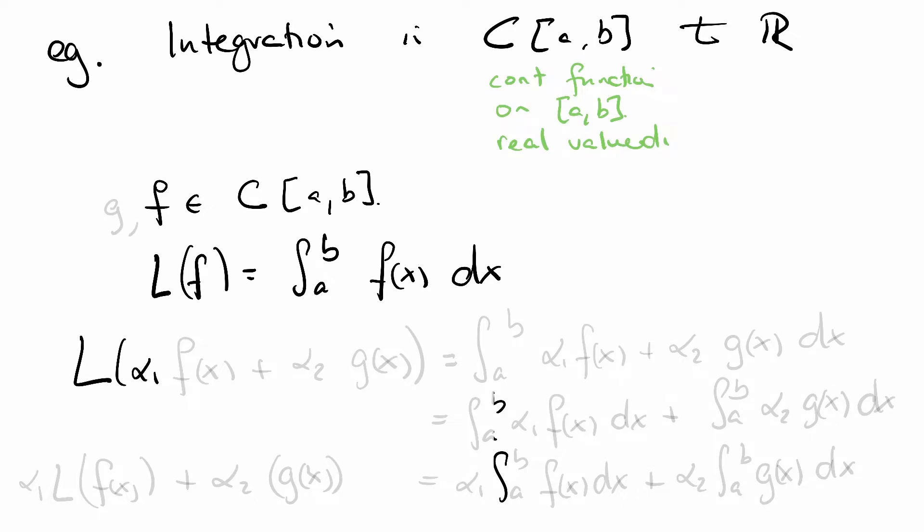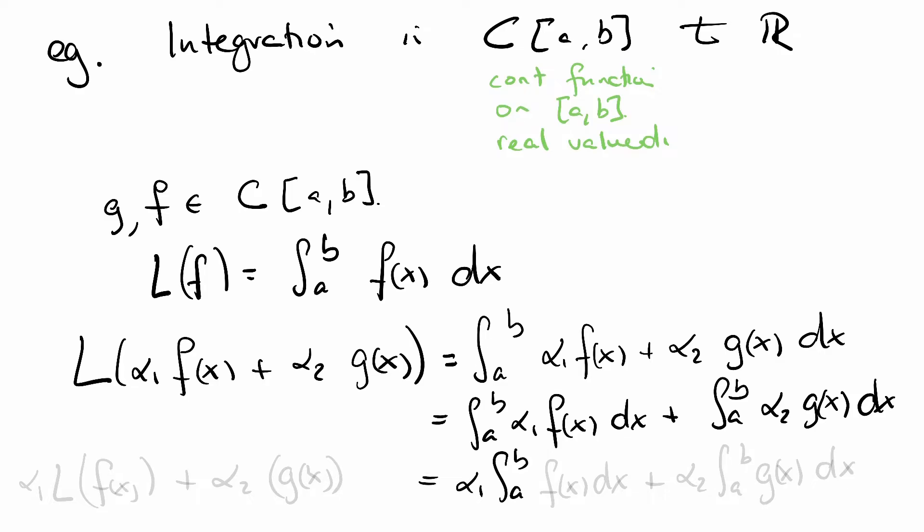You'll remember from your calculus class that we can set up this equation. Say g and f are both in here. This is the integral from a to b of alpha 1 f of x plus alpha 2 g of x dx. We know from calculus that integration breaks up along a plus sign and we can take the scalars out front.